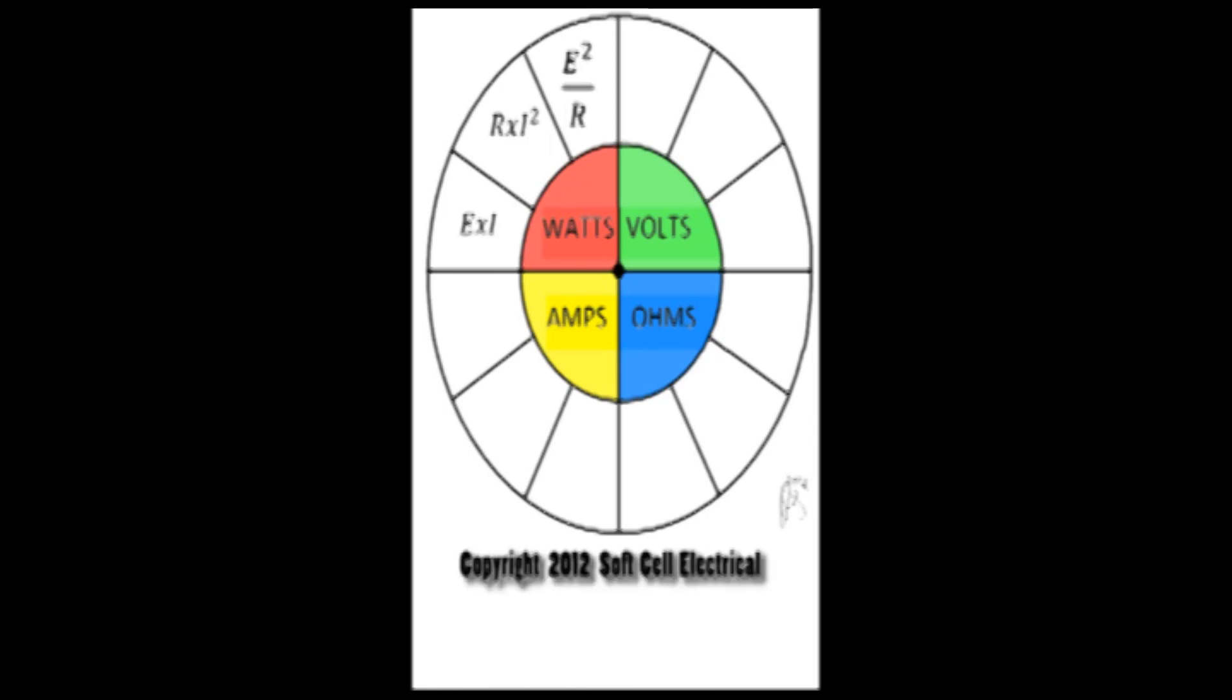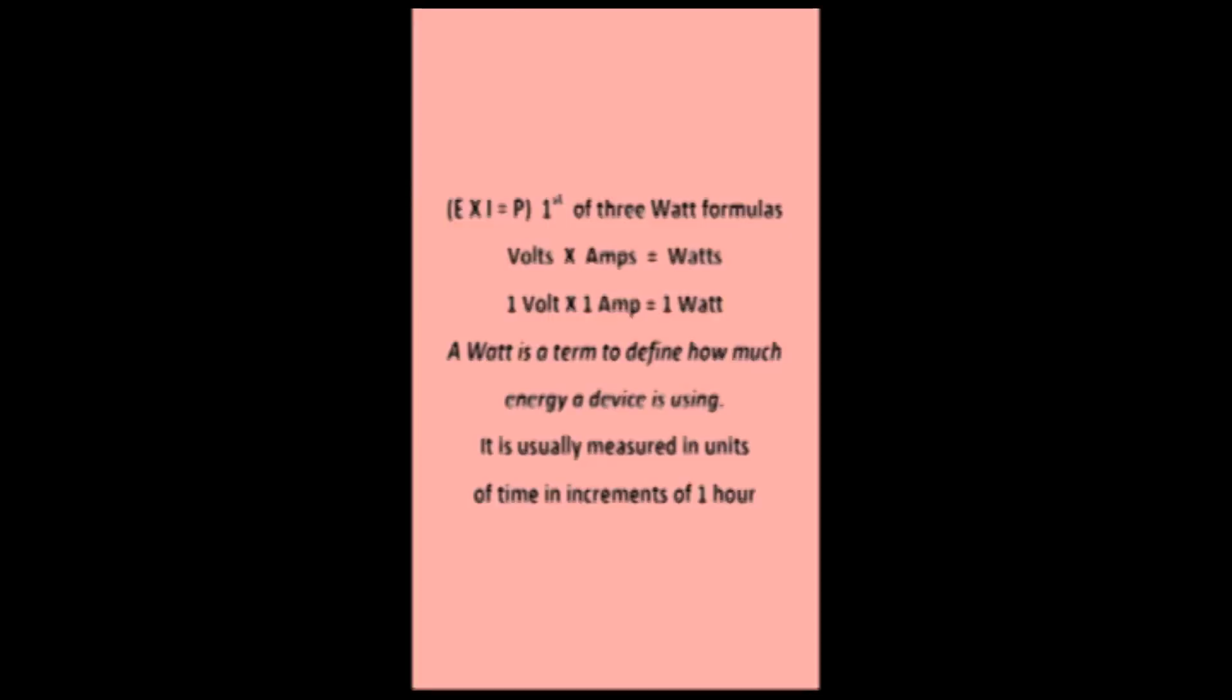They are by far the most widely used formulas of the four categories. The reason why is simple. Everyone wants to know how much power they are using. A watt is a measurable amount of power that you can be billed for. This cannot be said of any of the three other categories.